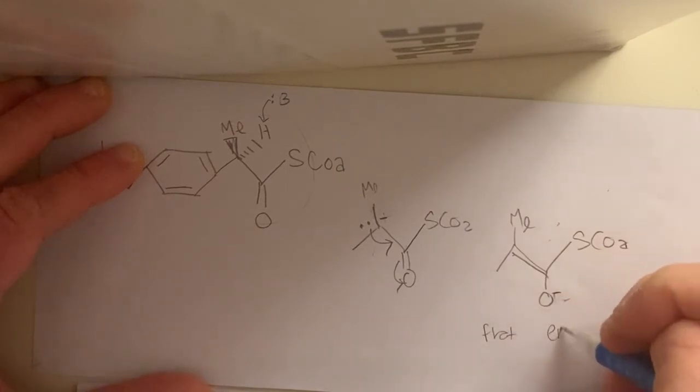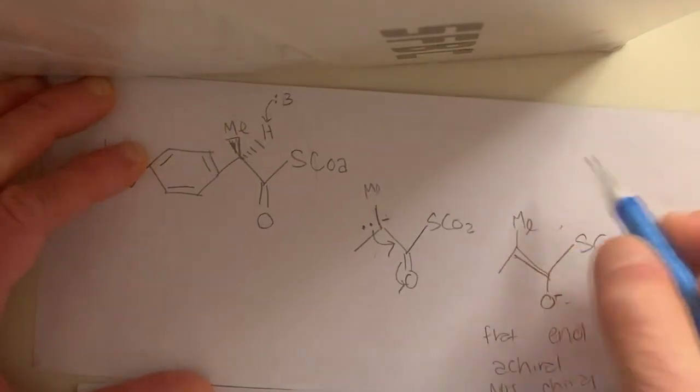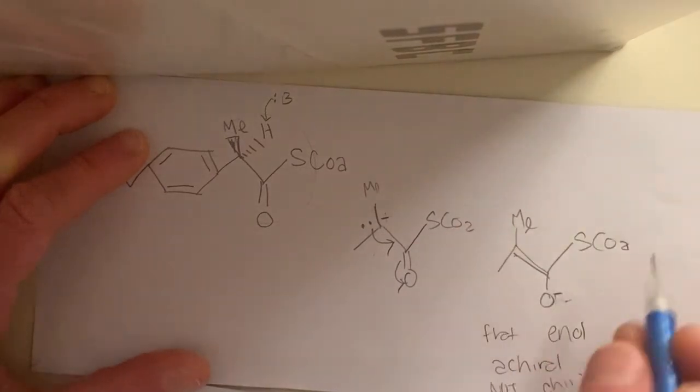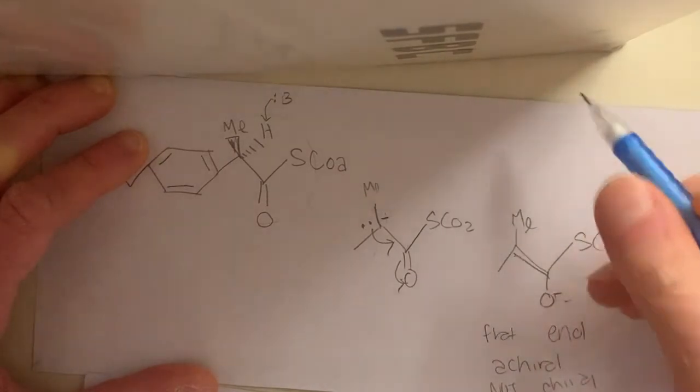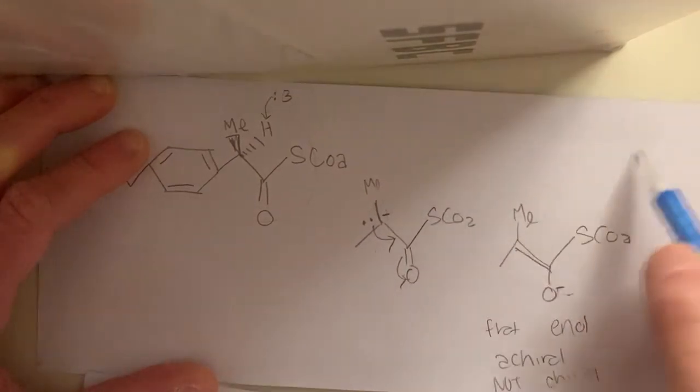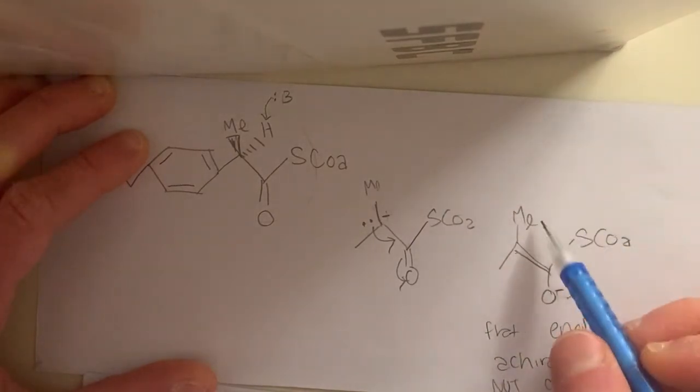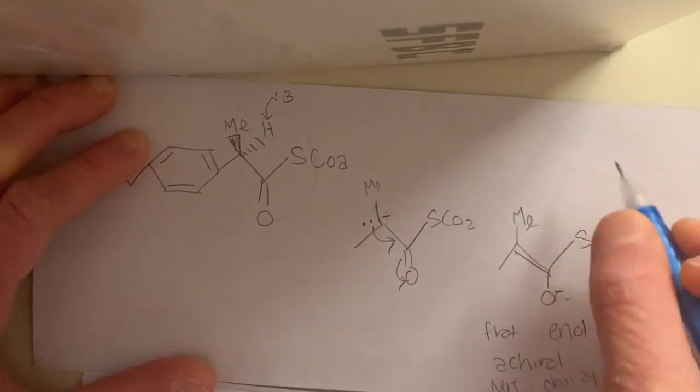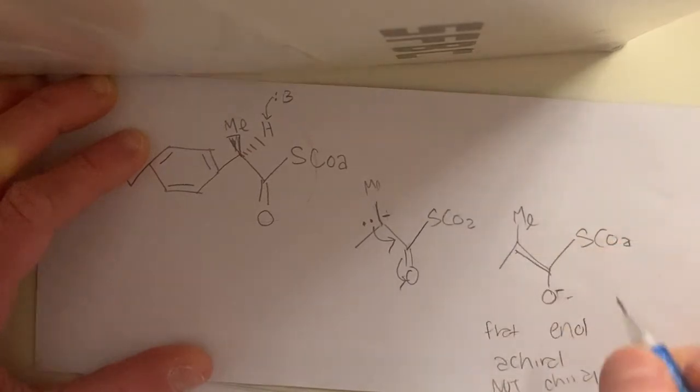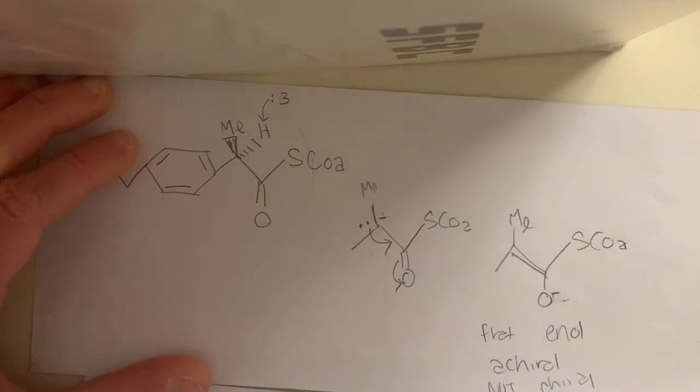And it's achiral, so it's not chiral. So this is flat, and you can have the hydrogen attack because this group is going to be, this group can now get attacked by the hydrogen to give you that from either direction. But because it's happening in this enzyme, it's going to happen in the particular orientation that is going to give you the S isomer.